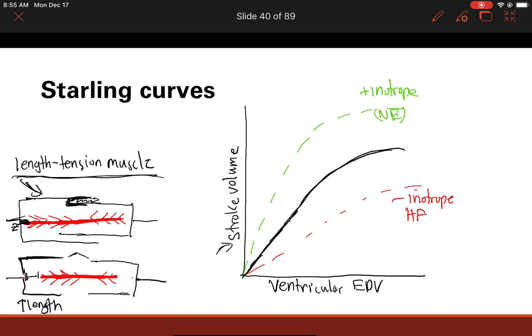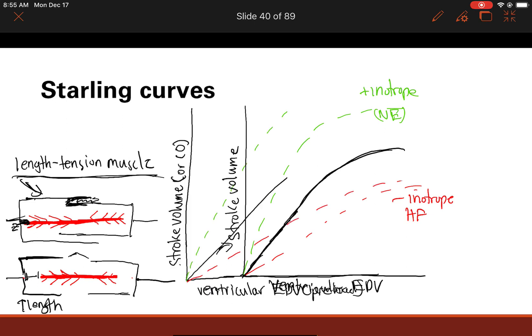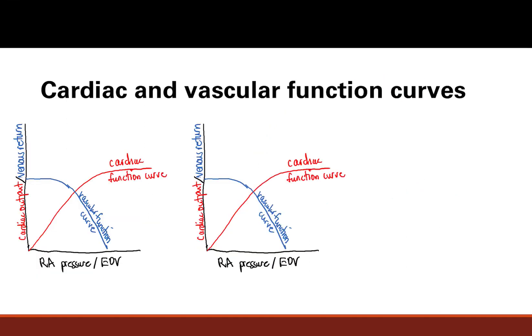Now we will go on to cardiac and vascular function curves, which are very similar ideas. The cardiac function curve is essentially the Starling curve we just covered. Cardiac output — which is stroke volume times heart rate — is plotted against end-diastolic volume or right atrial pressure. If you focus only on the cardiac function curve, that's the exact same thing as the Starling curve.